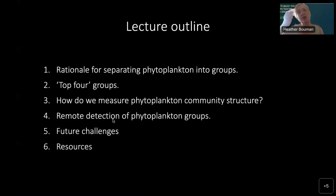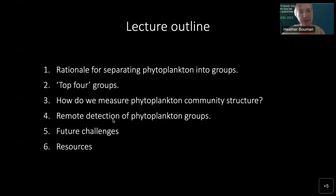Different phytoplankton play different roles in biogeochemical cycles, and so the cycling of energy and elements in the ocean relies heavily on the types of phytoplankton, not just the amount of chlorophyll or biomass. The lecture outline: we'll start with the rationale for separating phytoplankton into functional groups, then cover the top four groups used in global biogeochemical models, how we measure phytoplankton community structure in the field, remote detection by optical techniques, and future opportunities and challenges.